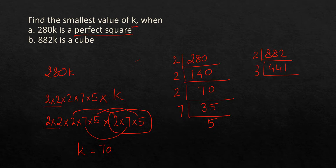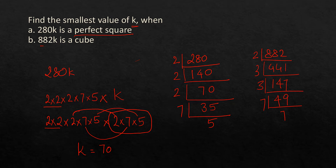Continuing: 441 ÷ 3 = 147, ÷ 3 = 49, and 49 = 7 × 7. So 882 = 2 × 3 × 3 × 7 × 7.